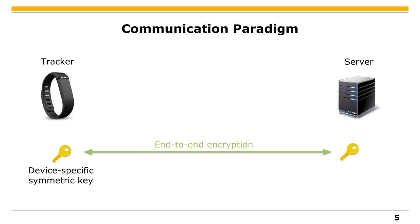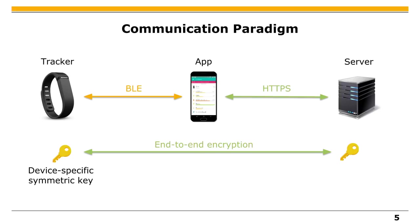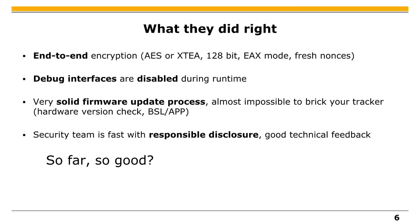If you look at the Fitbit system, they have end-to-end encryption. Every tracker has a key that is rolled out in factory and you cannot really access it except by opening the hardware, and the same key is on the server. On top of that, the tracker itself just has Bluetooth so it cannot directly talk to the server, but an app relays the traffic without modifying it. In the old trackers it's XOR encryption, but the new trackers use AES encryption with an IV — they do things properly.